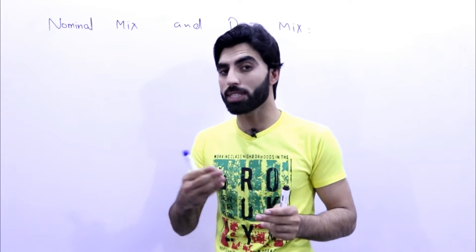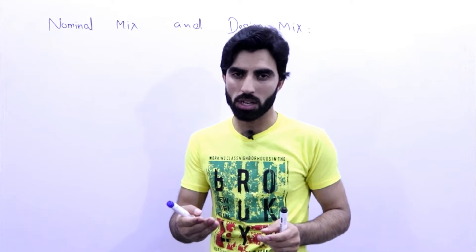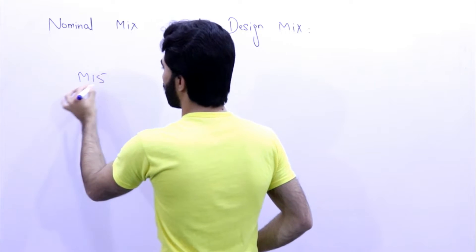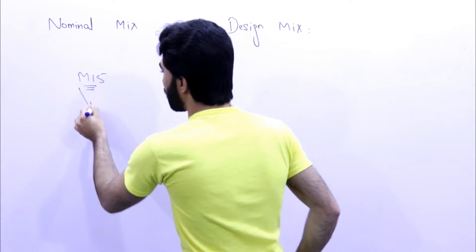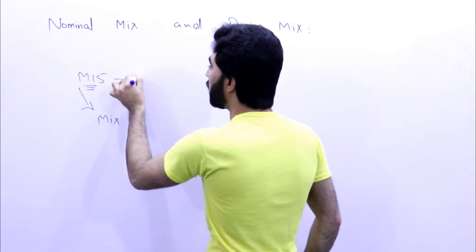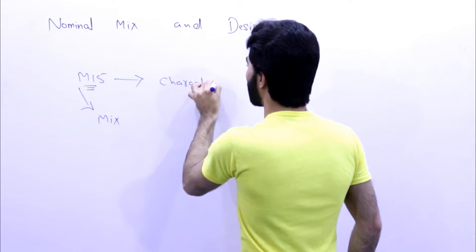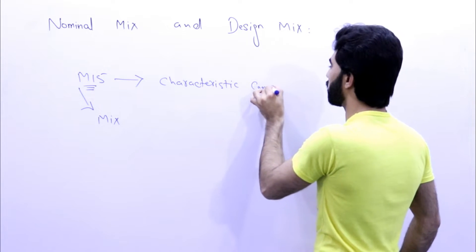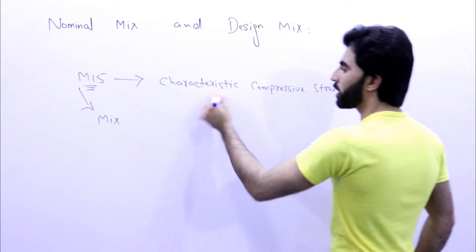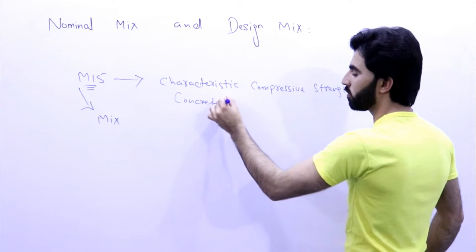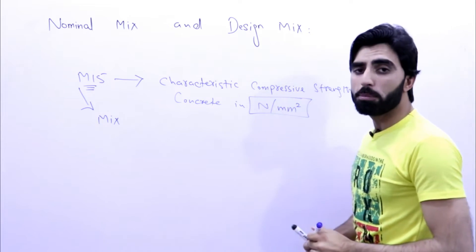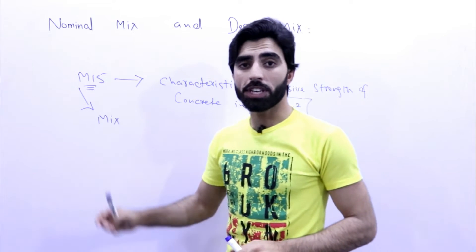In nominal mix, there are grades such as M5, M7.5, M10, M15, M20, and so on. So what is M and what is the number? For example, M15 is a grade of concrete. M stands for mix, and the number stands for the characteristic compressive strength of concrete in Newton per mm².